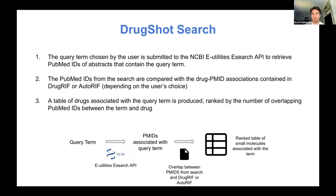To show the basic workflow for how the DrugShot search is conducted: in step one, you choose a query term submitted to the PubMed API to retrieve PubMed IDs. In step two, those PubMed IDs are compared with known drug-to-PubMed ID associations from DrugRIF or AutoRIF, depending on which background database the user selects. Step three produces a table of drugs and small molecules associated with the query term, ranked by the number of overlapping PubMed IDs.